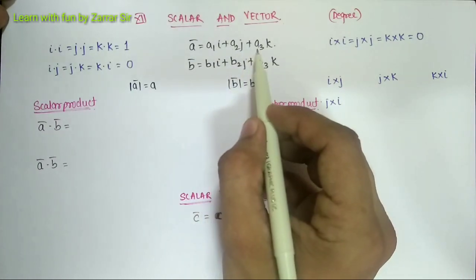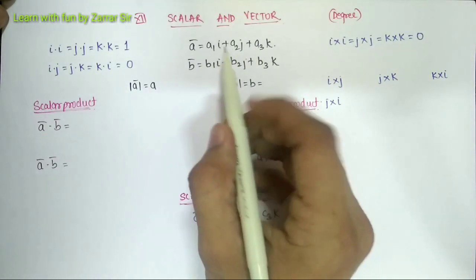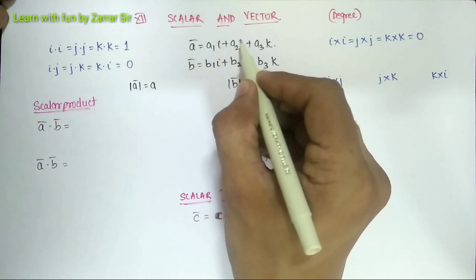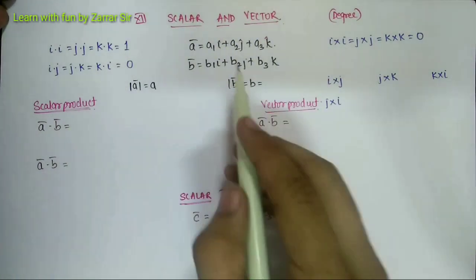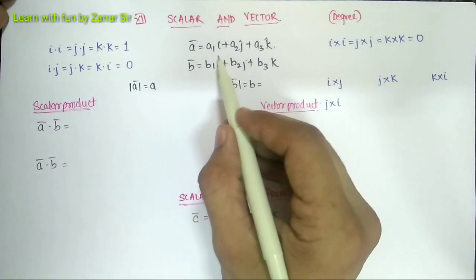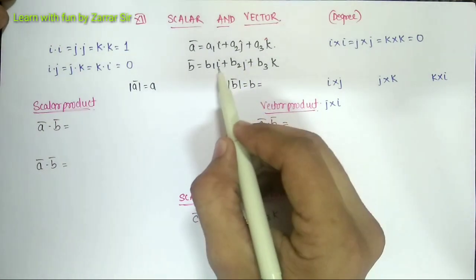So a1 i bar - see, i, j, k these are unit vectors, so we don't need to write always i bar, j bar, k bar. It is understandable that if I write i, j, k then a1 i bar plus a2 j bar plus a3 k bar.